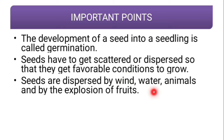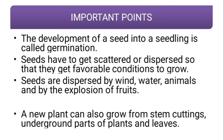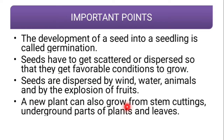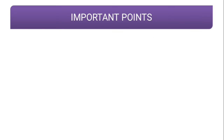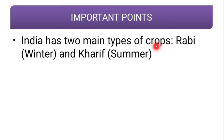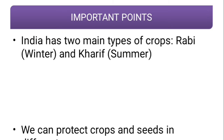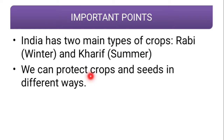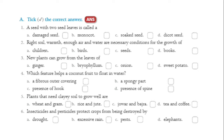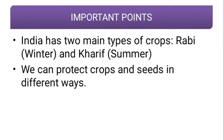The agents of dispersal are wind, water, and animals. Seeds can also be dispersed by explosion of fruits. New plants can also grow from stem cuttings, underground parts of plants, and leaves. India has two main types of crops: Rabi, which is grown in winter, and Kharif, which is grown in summer.